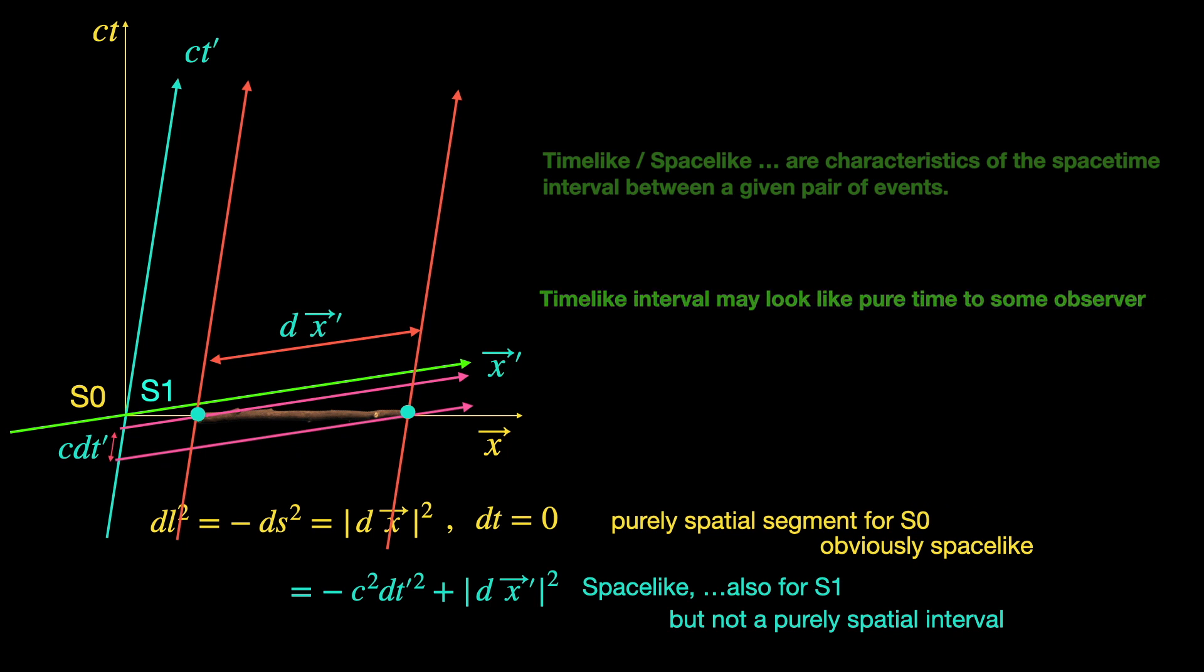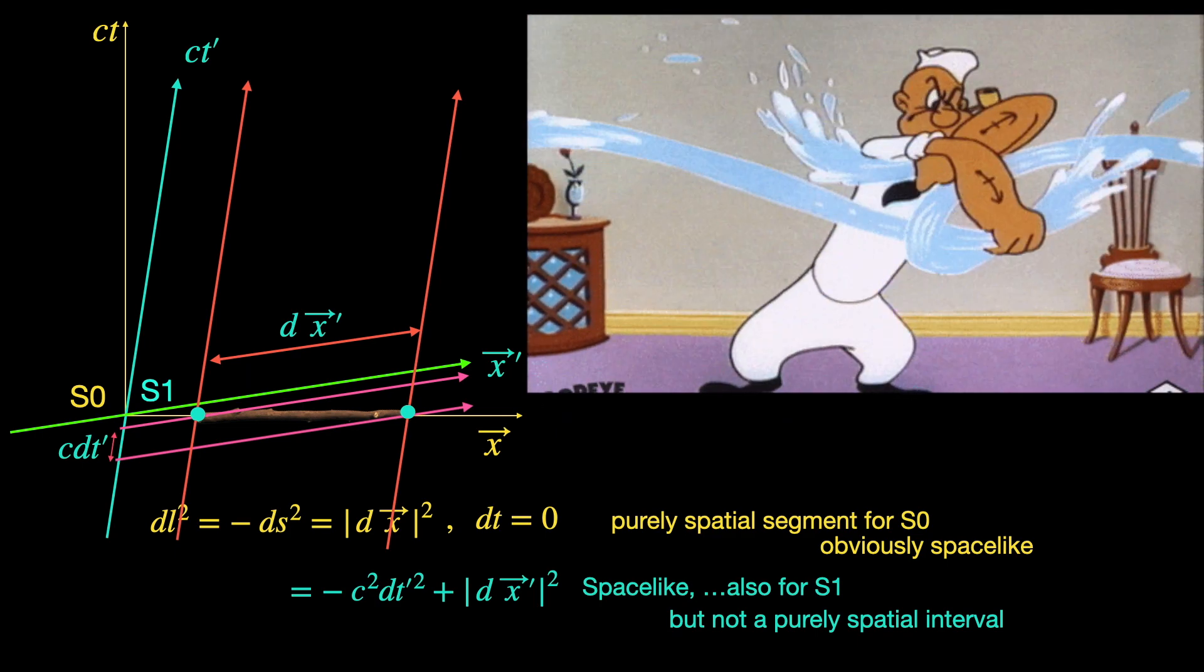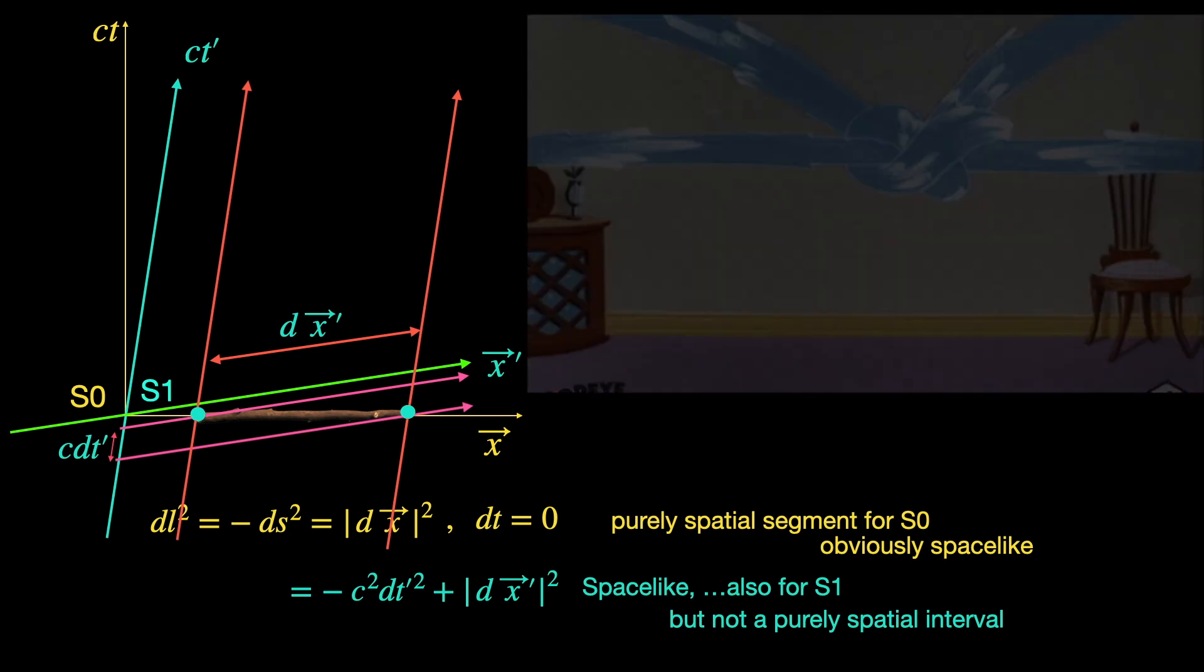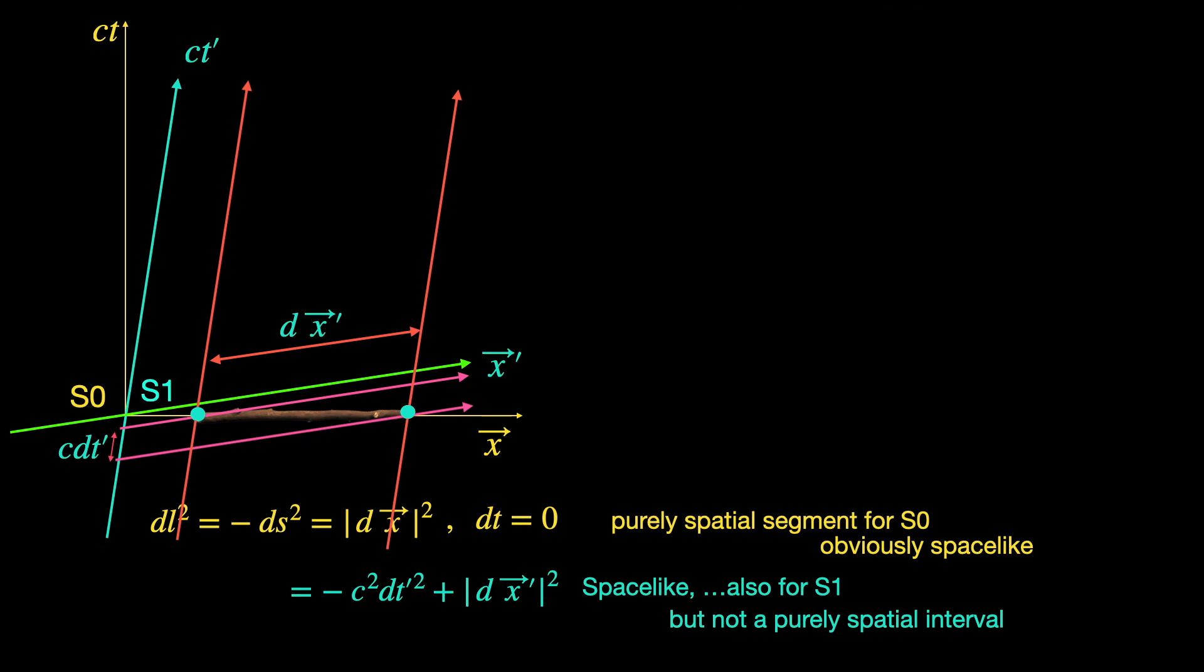And depending on this character, the interval may look like pure time or pure space respectively in certain frames. Although for observers in general, it still is a combination of space and time parts. So, what is space and what is time is kind of mixed up. And as we said, spacetime as a whole is the way to go if you want an observer-independent perspective.